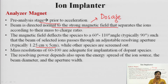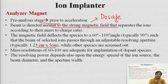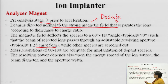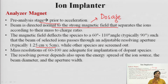Once the ion source is created and has the proper magnitude — meaning proper number of charged species — your dosage is proper. The same amount of charged species with a specific charge will strike the target, allowing attainment of the required penetration depth. Mass resolutions of 60 to 100 are adequate for ion implantation of dopant species. The resolving power depends upon the energy, the spread of the ion source, the beam diameter, and the aperture width through which the beam passes.